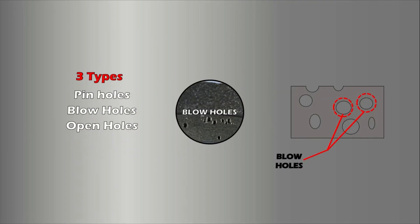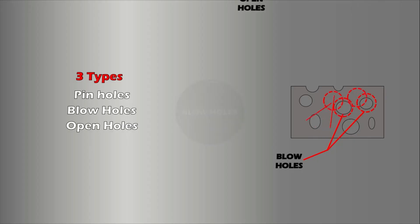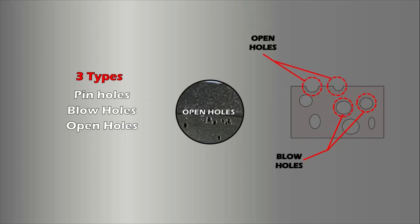Blow holes are larger holes that can appear inside a cast piece, invisible to the naked eye. Interior blow holes are detectable by X-ray, harmonic ultrasonic, or magnetic analysis. Open holes are a type of blow hole that appear at the surface of the part. These defects are caused by air getting trapped as metal is poured into the mold.